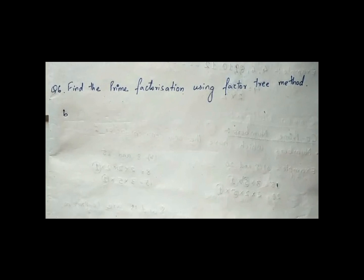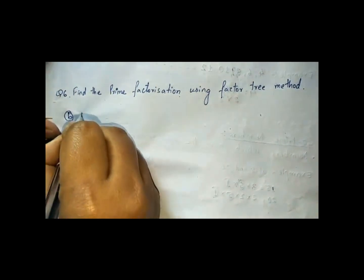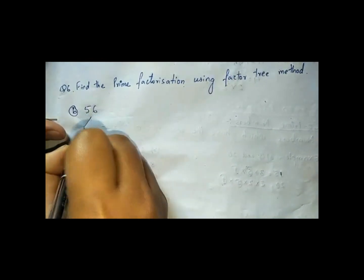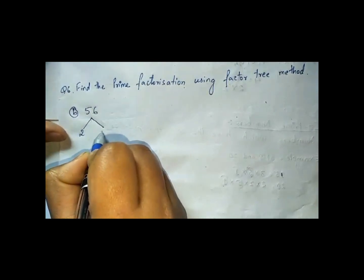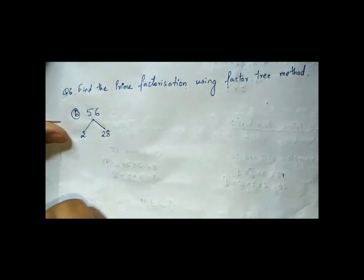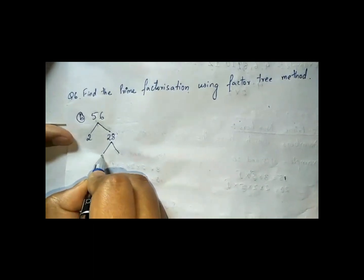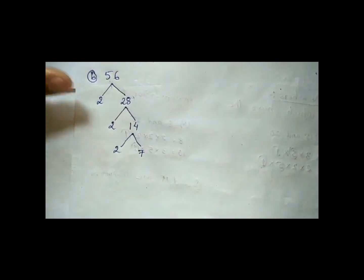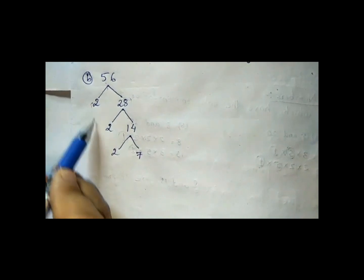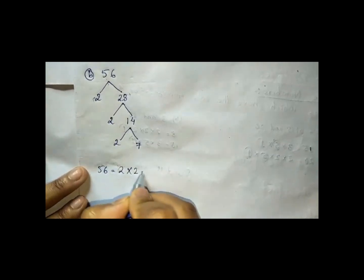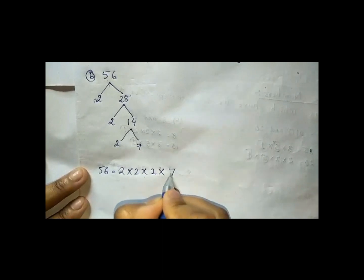Now question 6: find the prime factorization using the factor tree method. Let us solve question B for the number 56. We break 56 into smaller numbers: 56 into 2 and 28, 28 into 2 and 14, 14 into 2 and 7 — all prime factors. So the prime factors of 56 are 2 × 2 × 2 × 7.